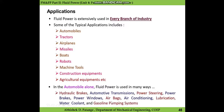Fluid power is extremely used in every branch of industry. Some typical applications include automotive technology — the hydraulic brake is a very good example, where the master cylinder operates using pressurized hydraulic oil. Other applications include tractors in the agricultural industry, aeroplanes, missiles, boats, robots, machine tools, construction equipment, and agricultural equipment. For machine tools, the chuck of a lathe machine is operated by a hydraulic motor in clockwise or anticlockwise direction.